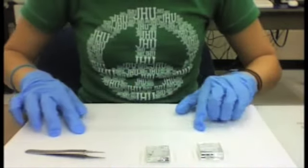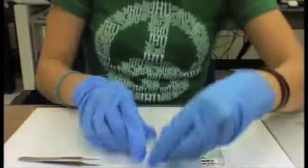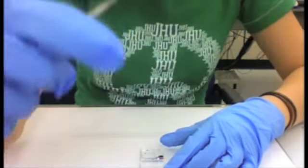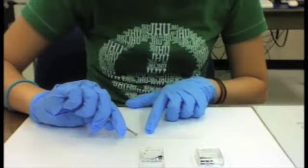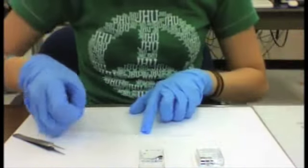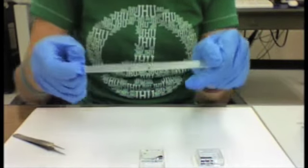First, you take a piece of scotch tape and place a flake of graphite in the center. Then, fold the tape over the flake and slowly peel it back apart so that the flake is cleaved in two.